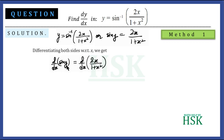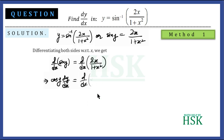Differentiation of sin y equals cos y · dy/dx, because we are differentiating a function of y with respect to x. So cos y · dy/dx = d/dx(2x/(1+x²)), and the right-hand side will be done by the quotient rule.